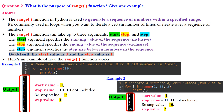By default, the start value is 0 and the step value is 1. In the first example, range(10) generates a sequence from 0 (inclusive) up to 10 (exclusive) with a step size of 1. The loop iterates through each value and prints it. You can also provide start and step explicitly: start=0, stop=10 (10 not included, so stop value is effectively 9), step=1.